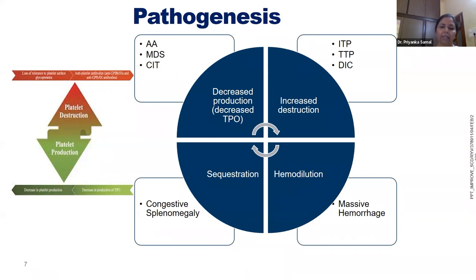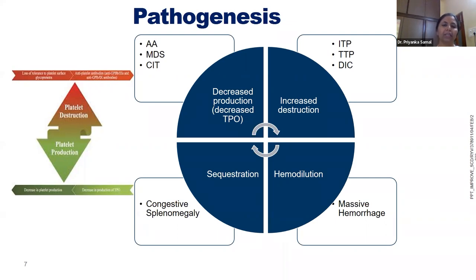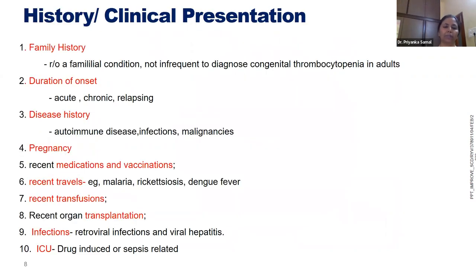Hemodilution occurs in road traffic accidents or postpartum hemorrhage where there is massive hemorrhage and the patient is given blood products like packed RBCs and FFPs, but physicians often forget to transfuse platelets in adequate amounts to maintain hemostasis. So whenever there is increased destruction or decreased production, platelet counts may decrease and result in thrombocytopenia.